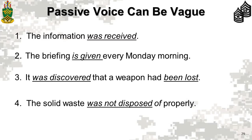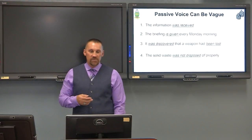Here are more examples. 'The information was received' — received by whom? What information? That's passive. 'The briefing is given every Monday morning' — given by whom? Who's responsible? Left out entirely — passive voice. 'It was discovered that a weapon had been lost' — who discovered it, lost by whom? We don't know the doers. Passive voice. 'Solid waste was not disposed of properly' — who's responsible? Questions left lingering at the end of passive sentences.